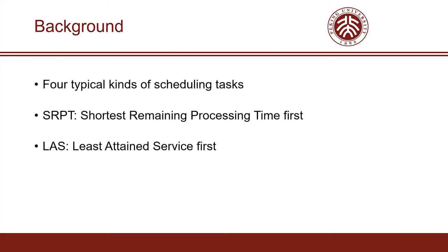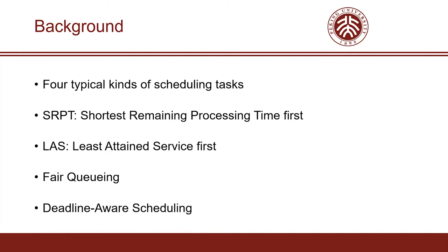Except FCT, other scenarios may focus on fairness. A typical task is fair queuing, where every flow should go in a round-robin manner. There are other scenarios that have deadlines for certain tasks. For example, deadline-aware scheduling optimizes FCT on the premise of meeting deadlines as many as possible.